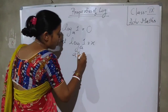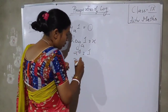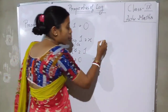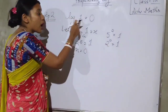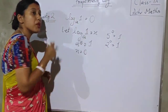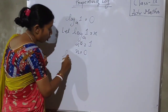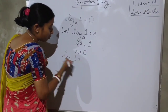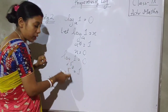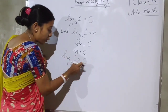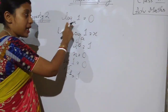Convert it into exponential form: A to the power x equal to 1. When will this equal 1? When the power x is equal to 0, then only 1 comes. For example, 5 to the power 0 is 1, 2 to the power 0 is 1. So, log 1 at any base will be 0. Suppose we write log base 5 of 1 equal to 0, because 5 to the power 0 is equal to 1. When x equal to 0, then only 1 comes. So, log 1 base A is equal to 0.